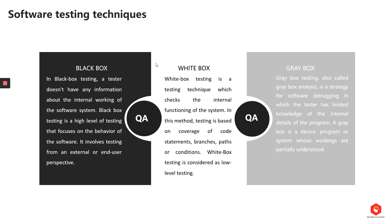Our last subject for today is software testing techniques. There are three techniques: black box, white box, and gray box. In black box testing, the tester does not have any information about the internal working of the software system — it's called black box because you don't see anything inside. Black box testing is a high level of testing that focuses on the behavior of the software, involves testing from an external or end user perspective, and can be applied to virtually every level of software testing: unit, integration, system, and acceptance.